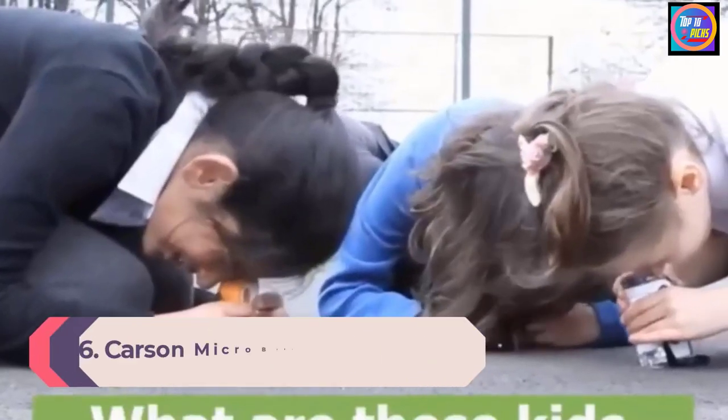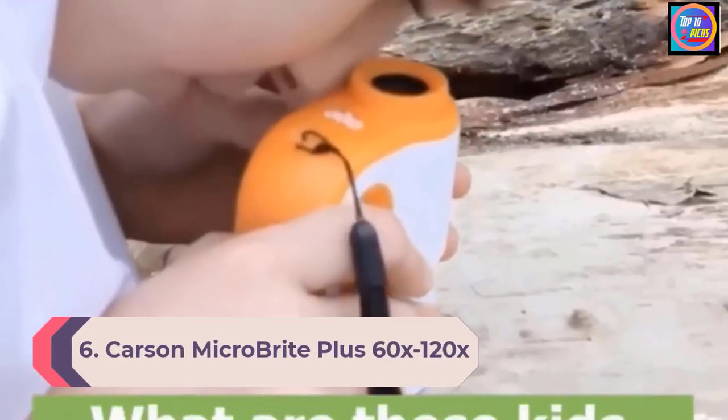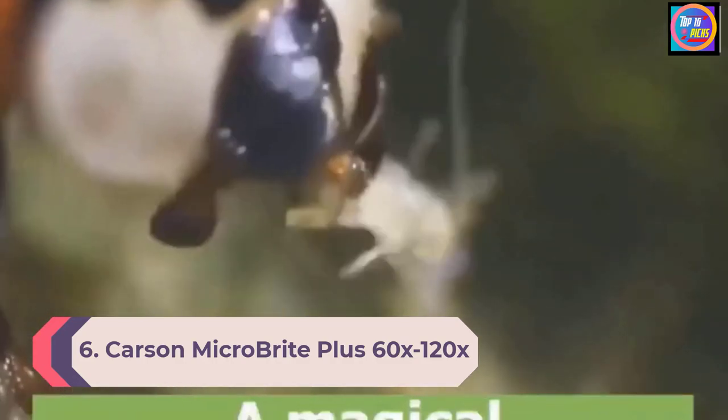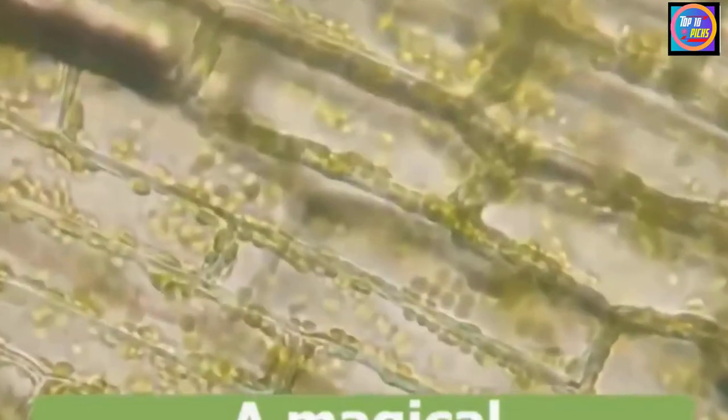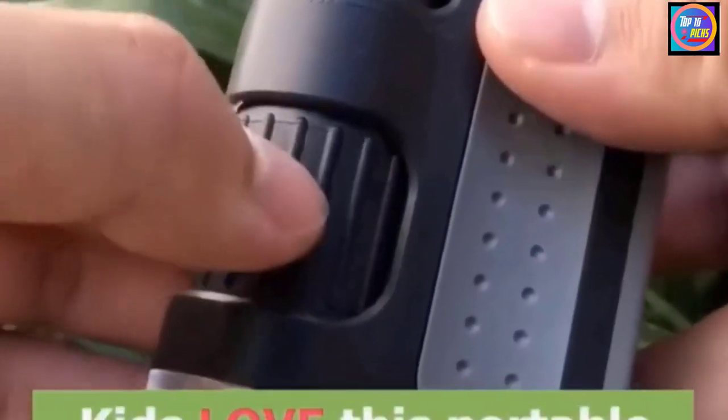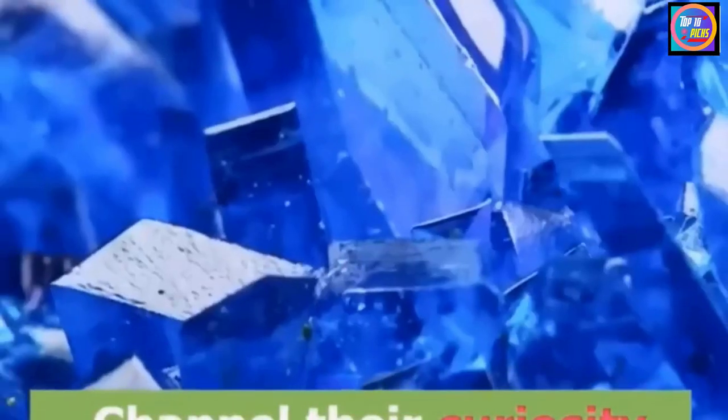Number 6. Carson Microbrite Plus 60x 120x LED Microscope. Carson designed this microscope with two objectives of 60x and 120x, allowing you to see more than 2mm of an object, which is ideal for exploring plants in great detail.